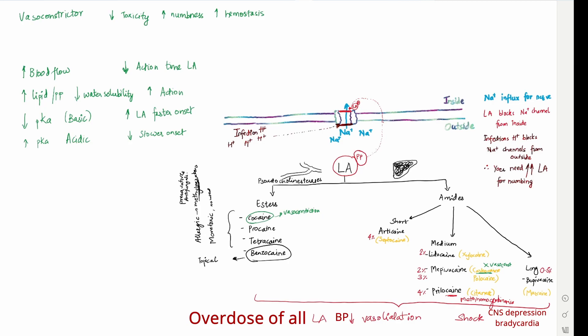The other thing that we need to remember with vasoconstrictors is that lidocaine is the only one which is safe in kids. Lidocaine is the only one which is safe in kids because it clears off sooner. These are very long acting. These are very short acting, but very strong. So this lidocaine is the only one which is safe for kids. Everything else is unsafe for kids.